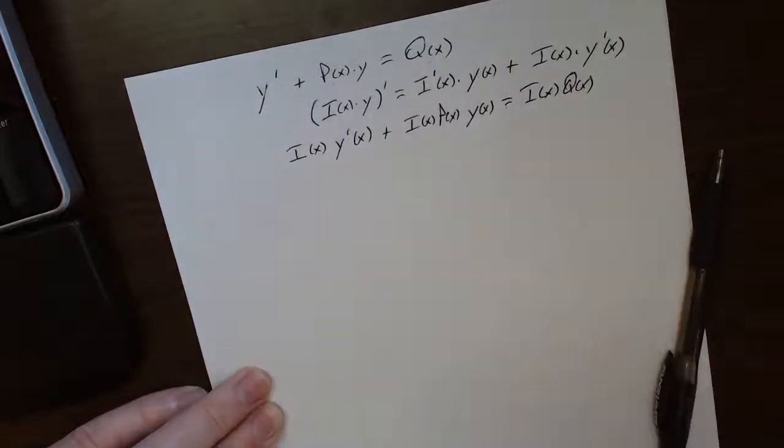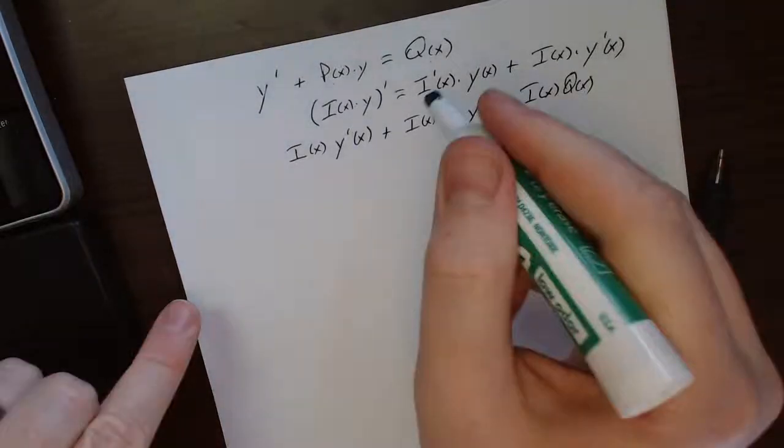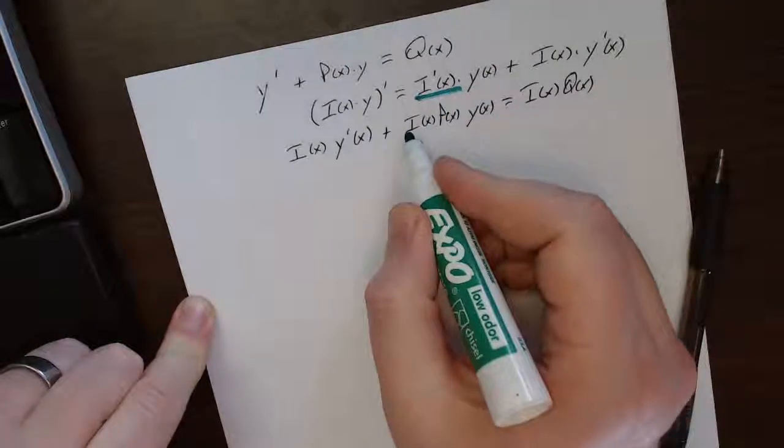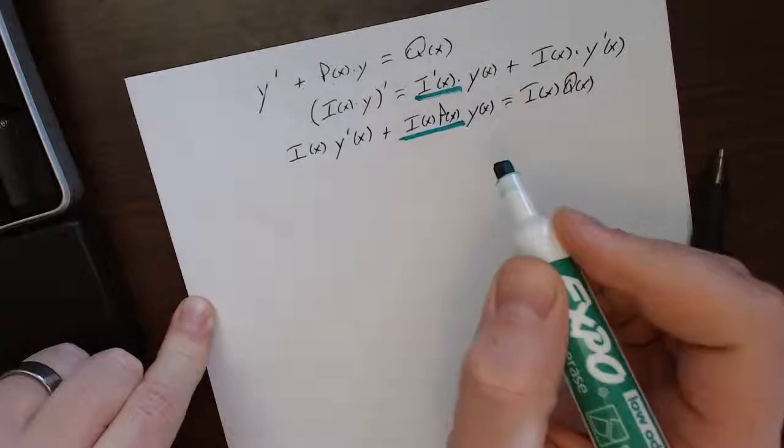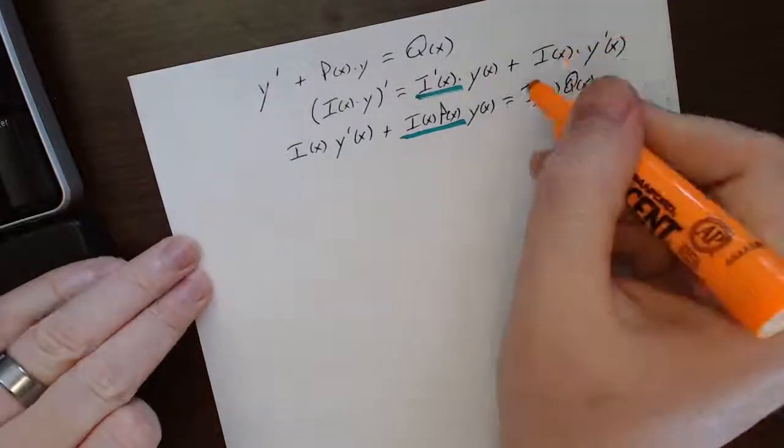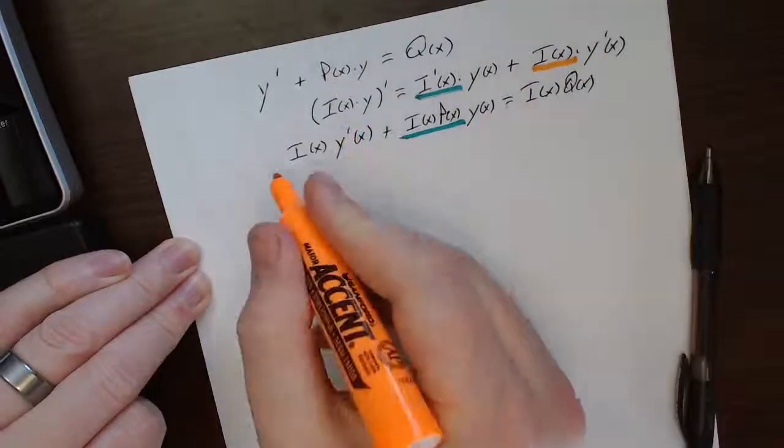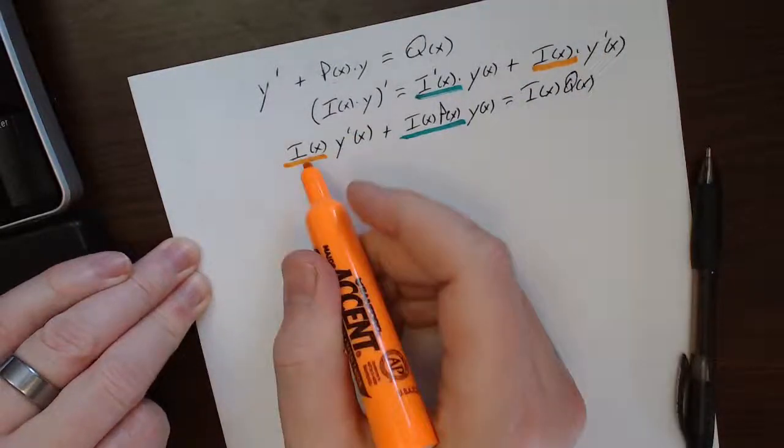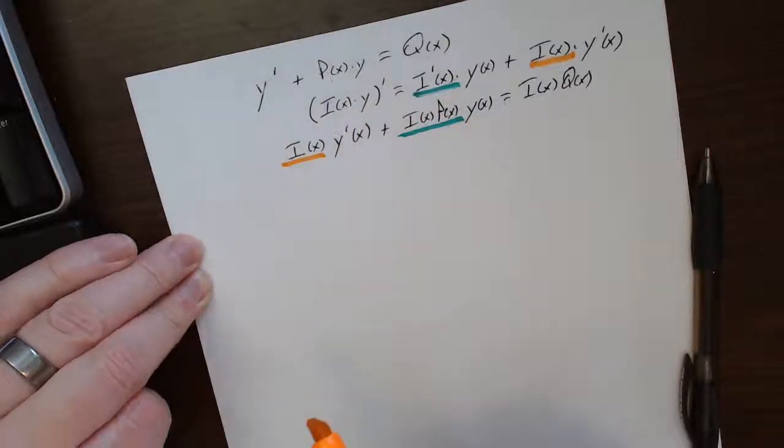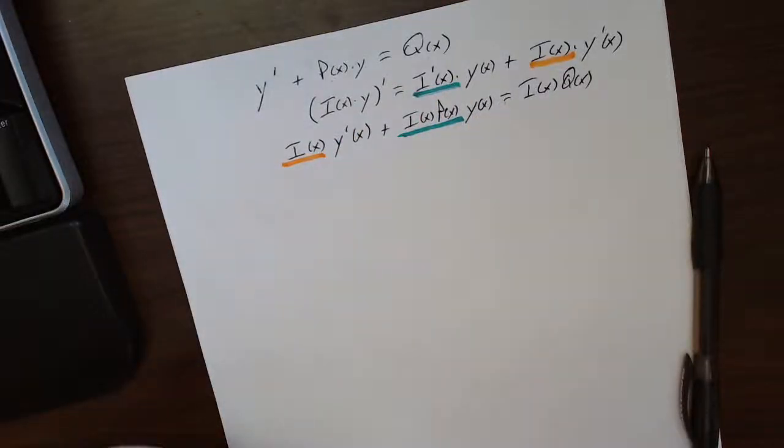Now, look at this. This right here, if that were equal to that, I would be home free. Why? Because this is already equal to this. Which means this whole thing here could collapse down to a product rule. We would be so happy.